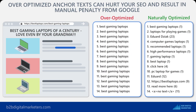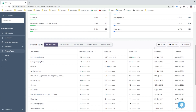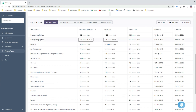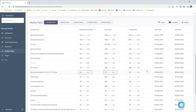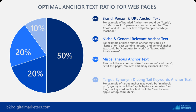You definitely want to avoid over-optimized anchor text, as that could lead to Google devaluing your backlinks or, worse, a manual penalty. For example, over-optimized anchor text like this page has would definitely pose a threat of being flagged by Google unless you are a big site like PC Gamer, which has some obvious benefits. You want to ensure you follow the safe anchor text ratio when doing link building. Here you can see an example of my recommended anchor text ratio.